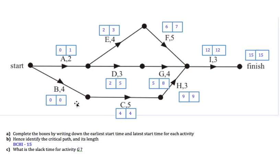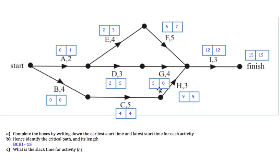For question C, the benefit of having the boxes set up is that it's easy to work out slack time — it's just the difference between the latest start time and the earliest start time, representing how long an activity can be delayed before impacting the project. For Activity G, the earliest start time is 5 and the latest start time is 8, so the slack time is 8 minus 5, which equals 3 — whatever unit of time the question uses.